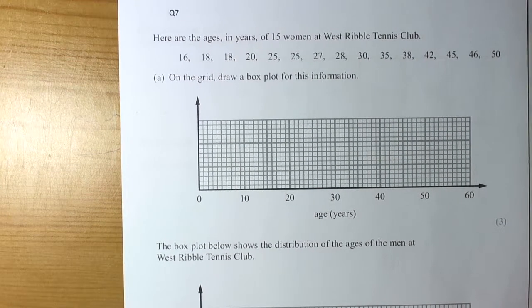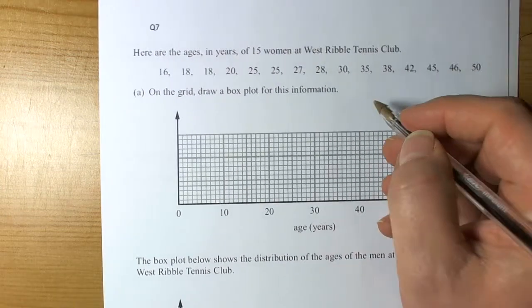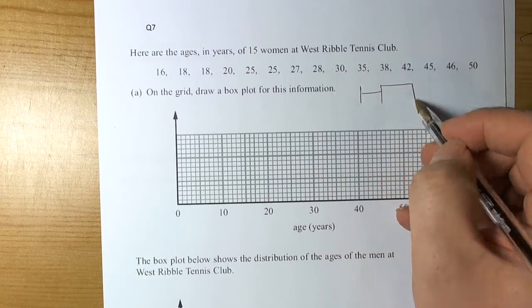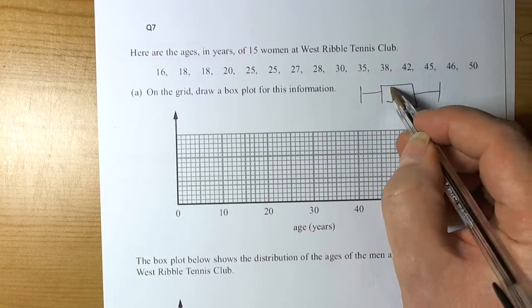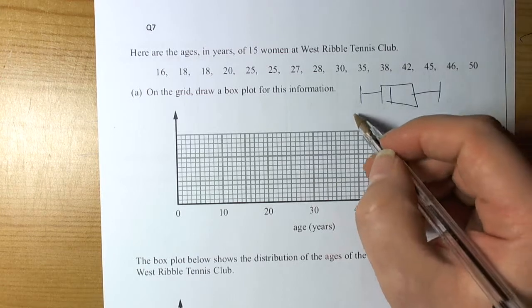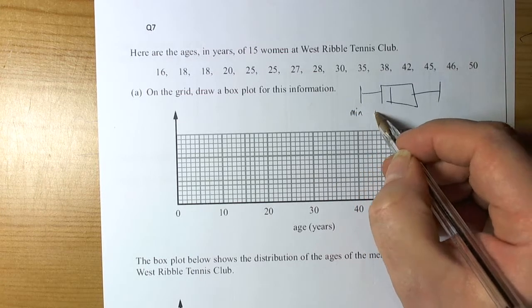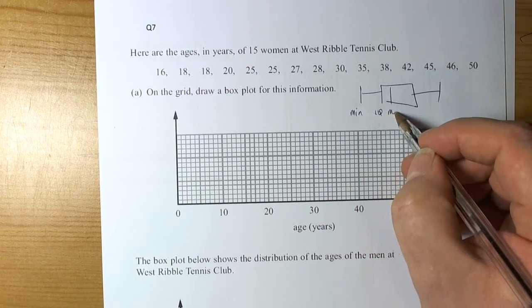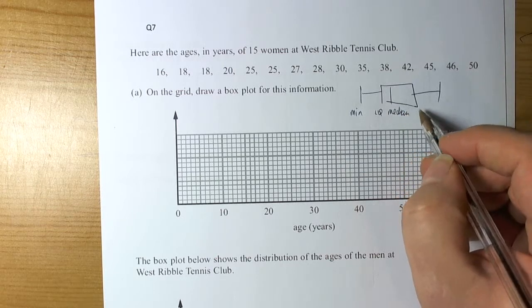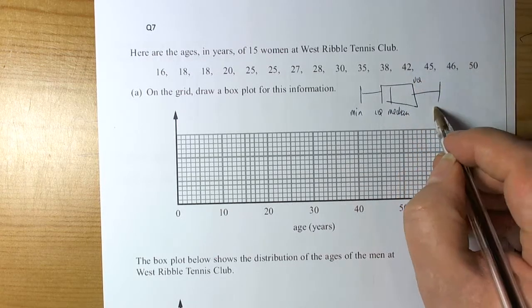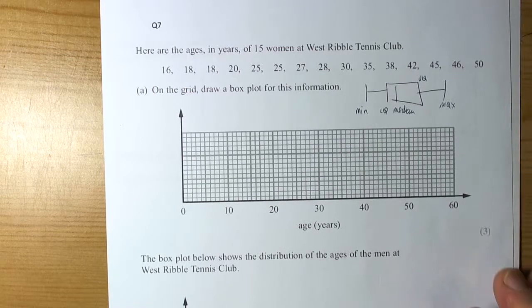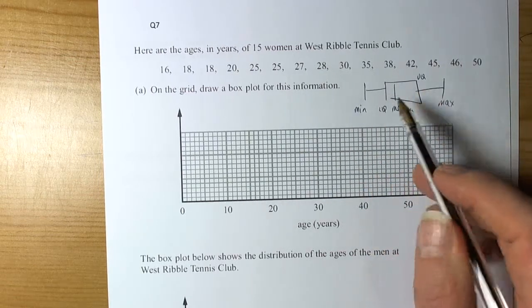Okay, so this question wants you to draw a box plot. So we should have a visual picture in our mind of what a box plot may look like. So we should remember that we need a minimum value, a lower quartile value, a median value, an upper quartile value and a maximum value. Those five points get plotted and then we draw the box around them.